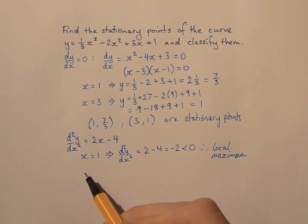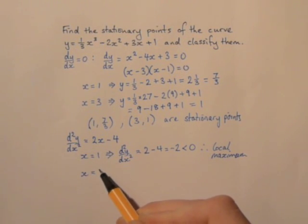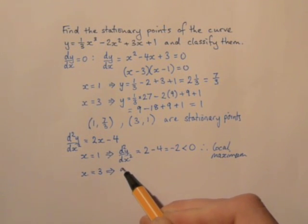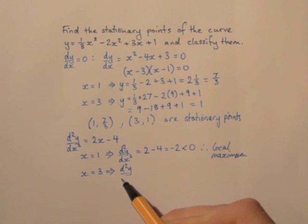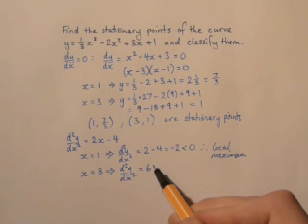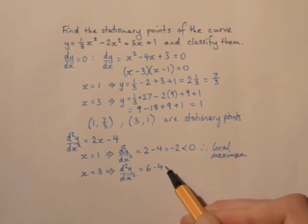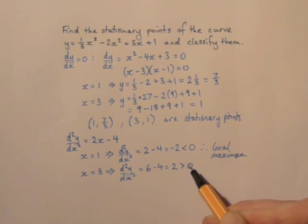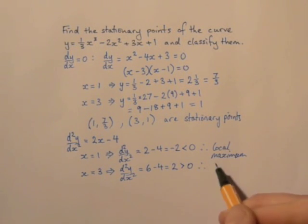The other stationary point, when x equals three, the second derivative is going to be two times three, which is six, minus four, which is plus two, and that's greater than zero, so that tells me that we have a local minimum.